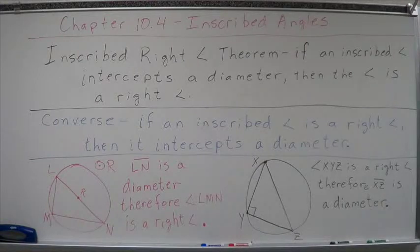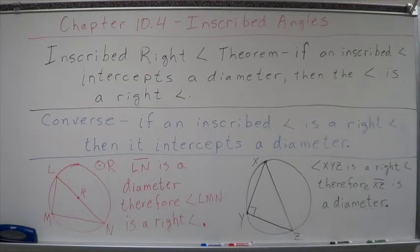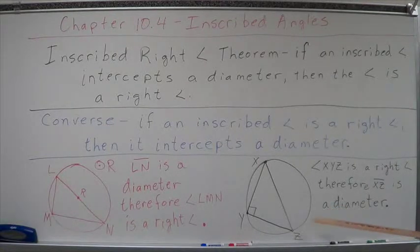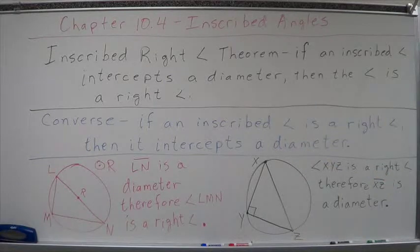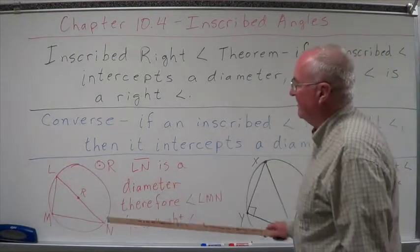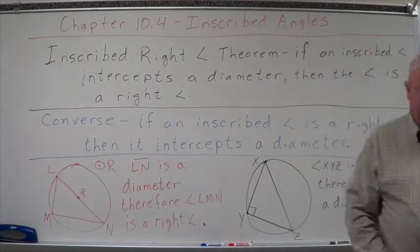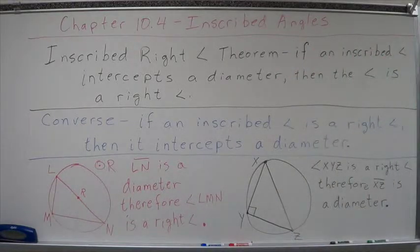Very powerful theorem — lots of ways to solve things, and you're just expected to know. If I have a circle and I have an inscribed angle that's a right angle, it creates a diameter. You have a problem on your homework that looks exactly like that. If I have a diameter and an angle that intercepts it, that angle is a right angle.